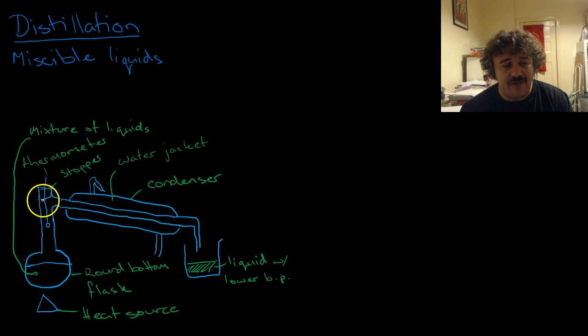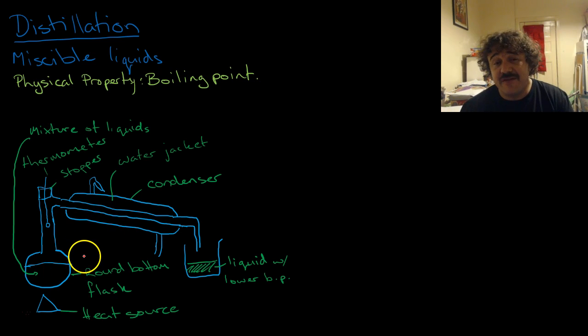You've got a thermometer there with a stopper around it, and this here is a water jacket, which makes that part of the condenser. That's the clue to what this actually does. Essentially, the physical property we're using here is boiling point.